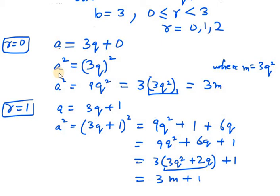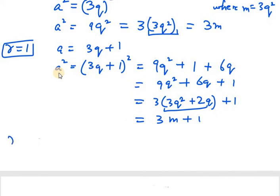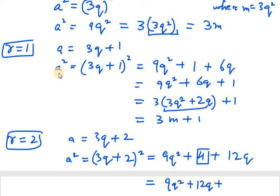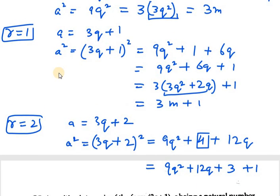The last value is r equals 2. We need to take square of it. a squared equals 3q plus 2 whole squared, which is 9q squared plus 4 plus 12q. We can split this as 9q squared plus 12q plus 3 plus 1. Taking 3 common, we get 3 times (3q squared plus 4q plus 1) plus 1. Whatever we have in bracket can be written as 3m plus 1.